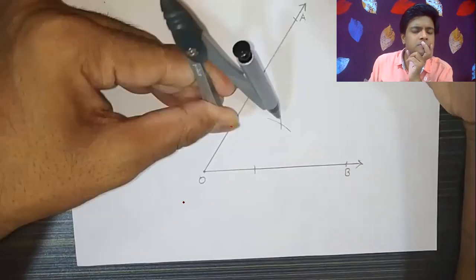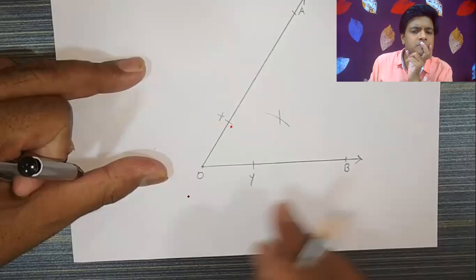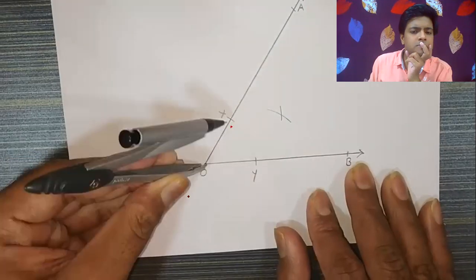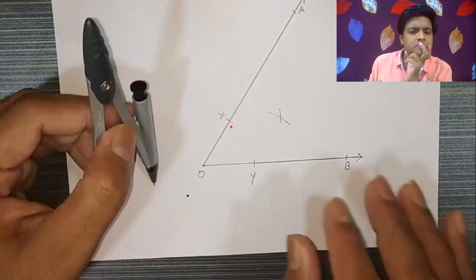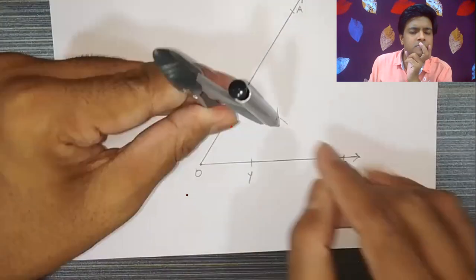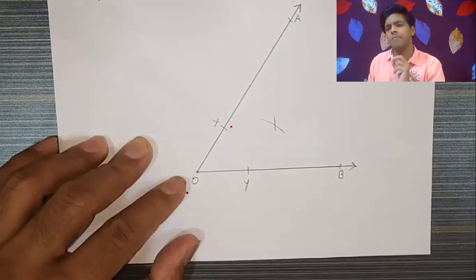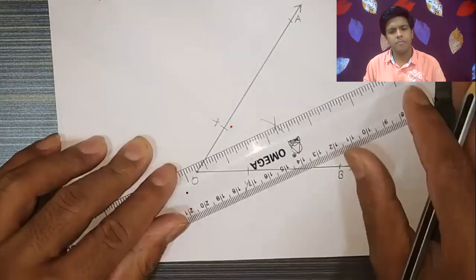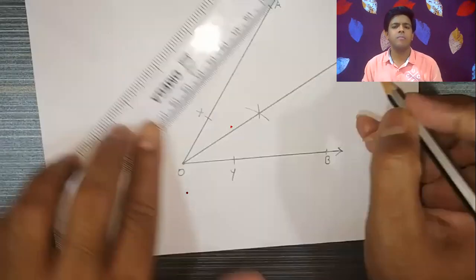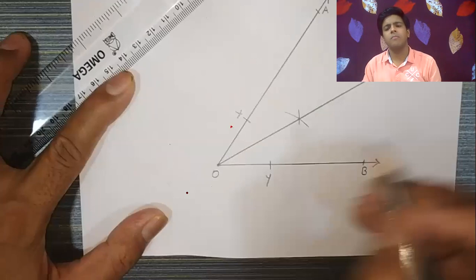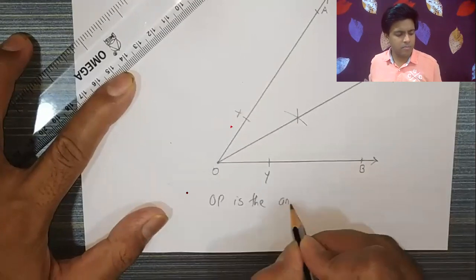Suppose we call these points X and Y. We took the same length on both arms, then we cut the same radius from points X and Y to get an intersection point. We join this intersection point with O, and that line will be your angle bisector. So suppose OP is the angle bisector.